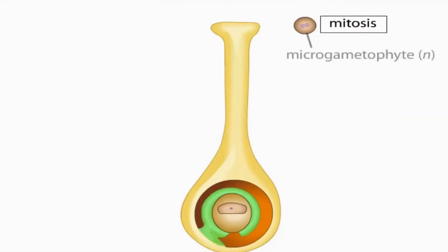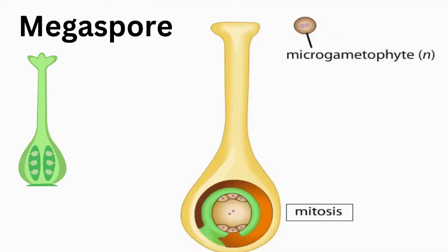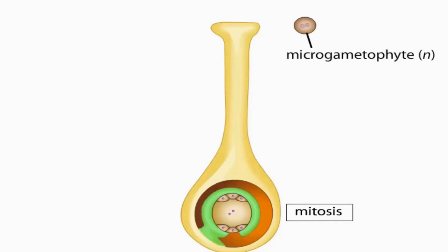A pollen grain is the haploid male gametophyte called a microgametophyte. The surviving megaspore divides by mitosis to produce seven haploid cells. One large centrally located cell contains two nuclei called polar nuclei.